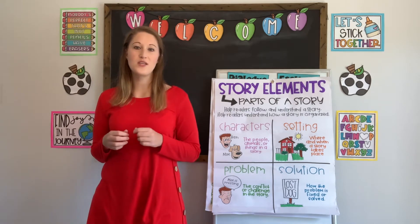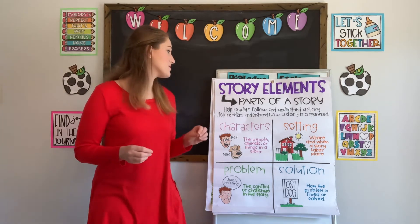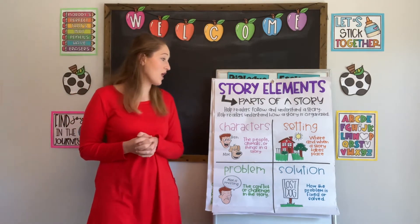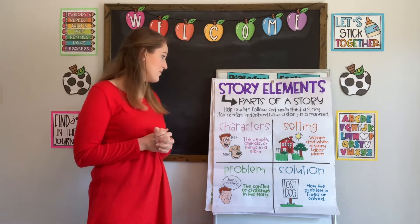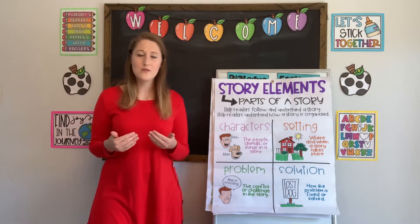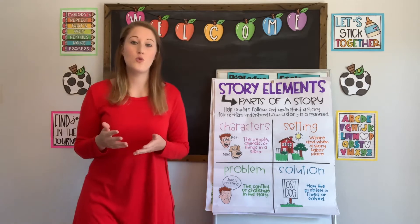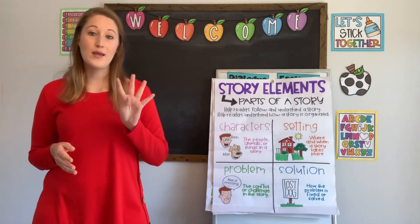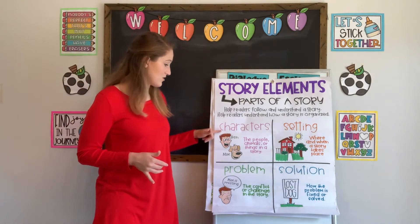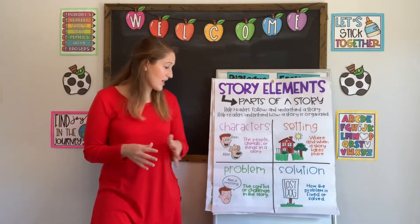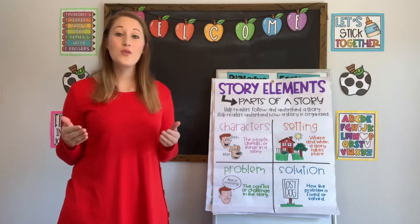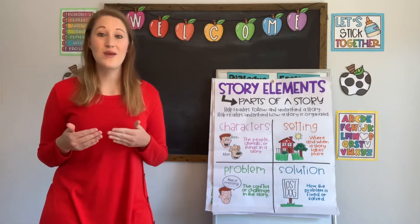Today, let's start off by talking about some story elements. Story elements are the parts of a story, and they help readers to follow and understand the story, and they help you understand how the story is organized. When we talk about story elements, there are four main parts. The first is the characters — the people, animals, or things in a story. They're who the story is about, the things that are making those actions.